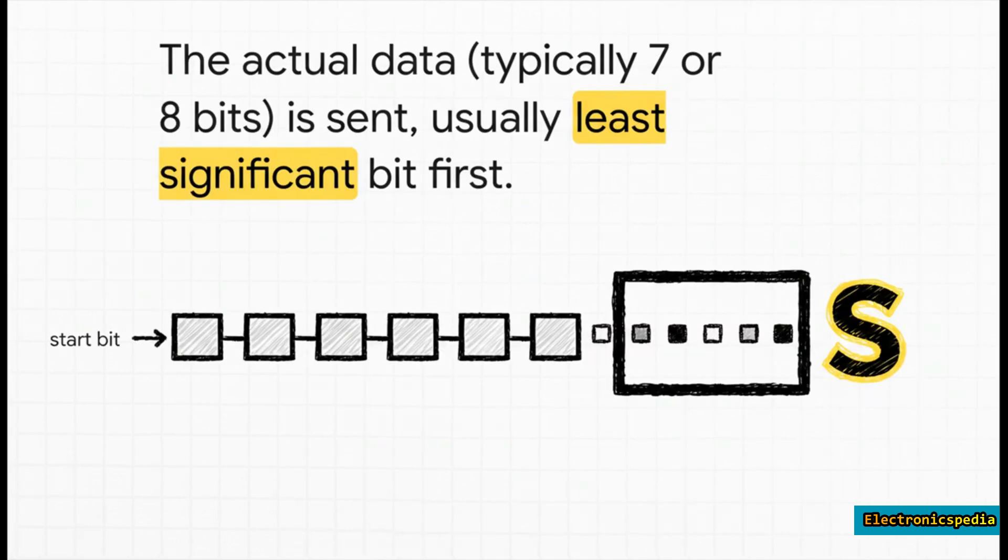The instant that start bit is over, the main event begins: the data frame. This is usually seven or eight bits of your actual message. They get sent out one after the other, typically with what's called the least significant bit, or LSB, going first. So here, for example, you can see the bits for the letter S marching down the wire.